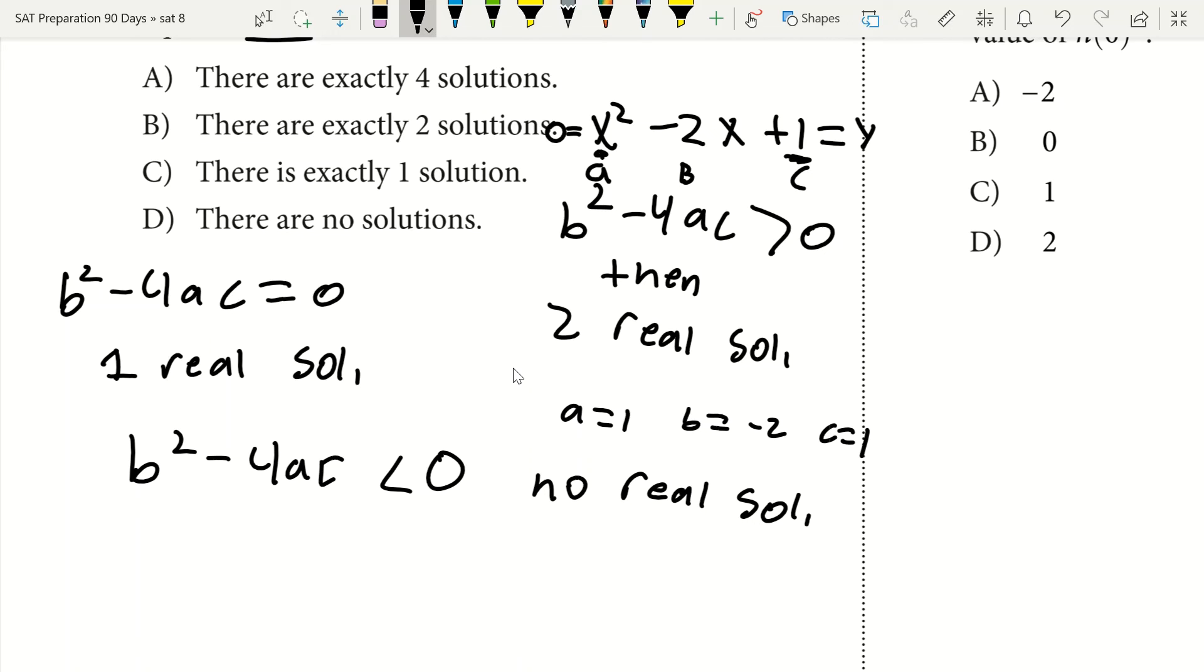So at that point, we go ahead and plug it into b squared minus 4ac. So b is negative 2, we square that. We subtract 4 times a, which is 1, and then times c, which is also 1. We know that negative 2 squared is 4, and then we have 4 minus 4 times 1 times 1, which is 4 minus 4, which leaves us at 0.